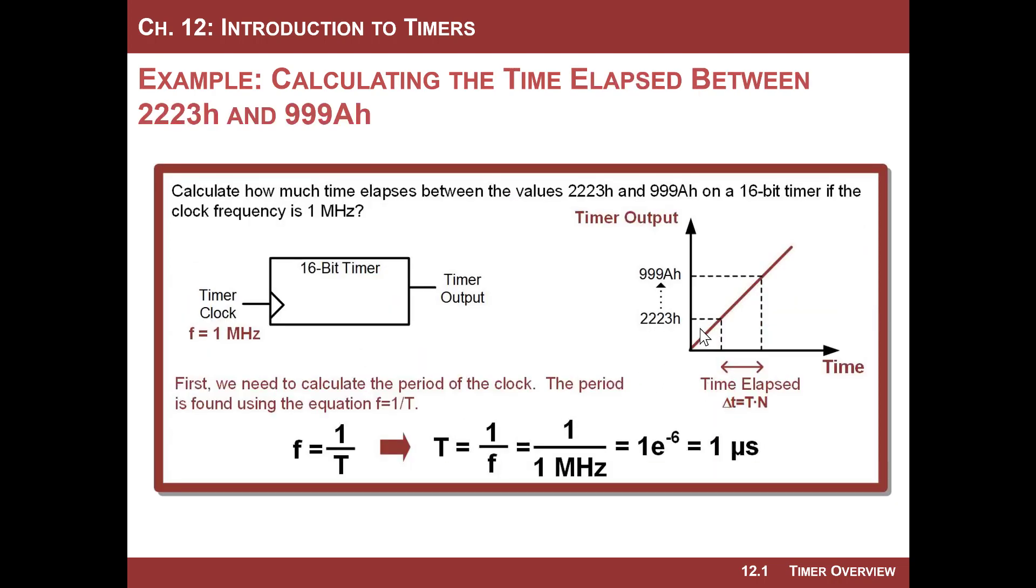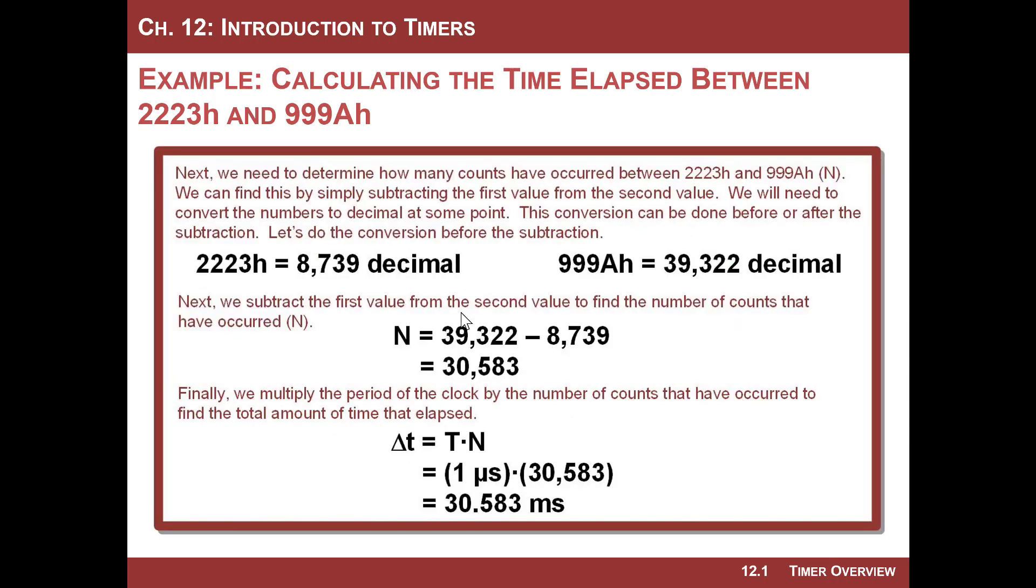All right, what about the difference between two specific values? So this one's pretty self-explanatory. If we had a 16-bit counter clocked off 1 megahertz and we wanted to know how much time has passed between 2223h and 999Ah, we simply subtract these two values and multiply it by the period of the clock. First, let's calculate the period of the clock. 1 over the frequency is the period. 1 over 1 megahertz is 1 microsecond.